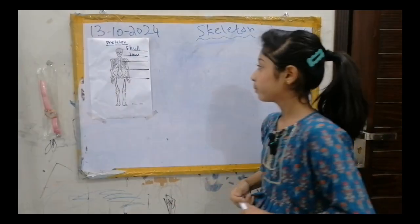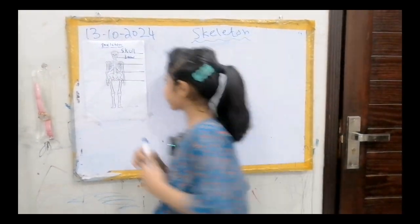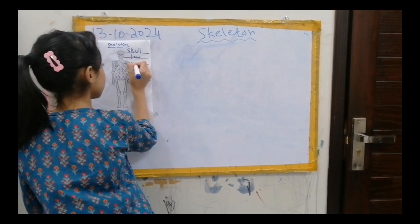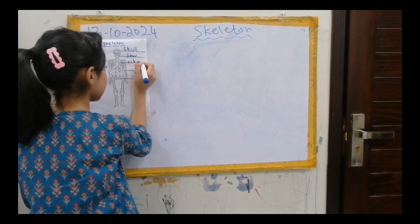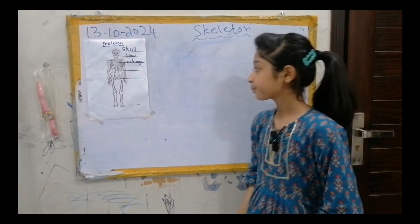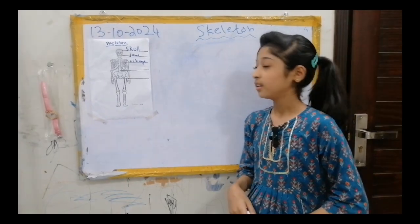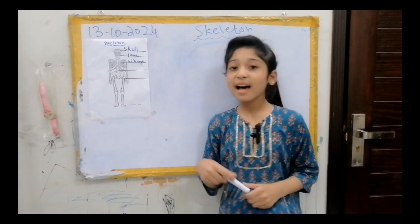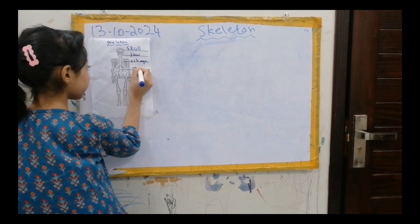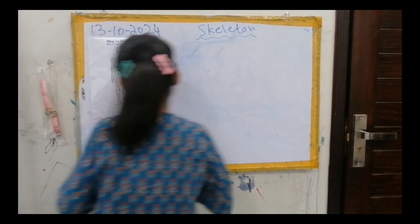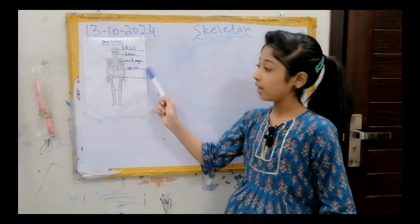Now this is a rib cage. Now can you tell me which part is this? This is a spine. Now this is called the hip bone.